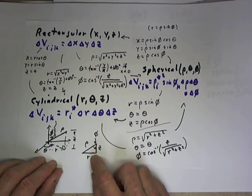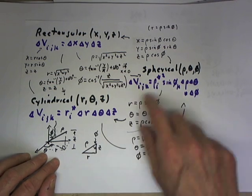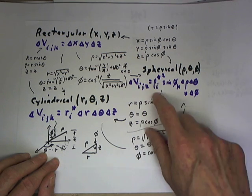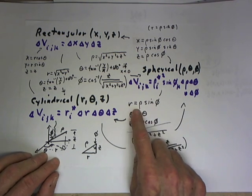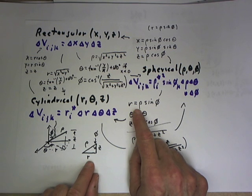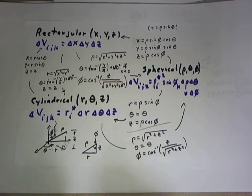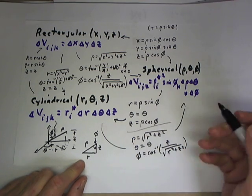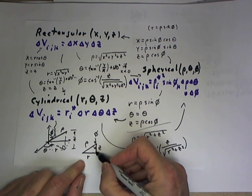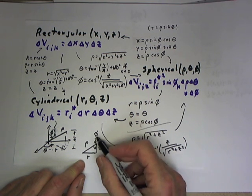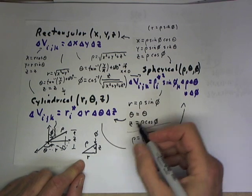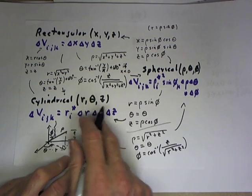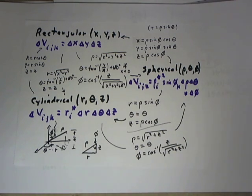We can use the same triangle as a key for transferring spherical to cylindrical coordinates. The transformation equations are: r equals rho times the sine of phi, since r is opposite the angle phi and rho is the hypotenuse. And z equals rho times the cosine of phi. Those two come from the triangle simply. With theta being the same, we have our transformation from spherical to cylindrical coordinates.